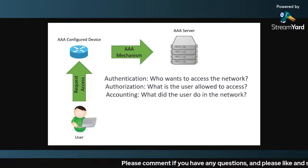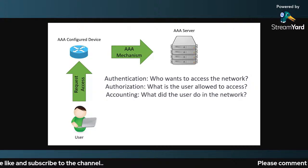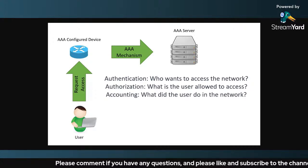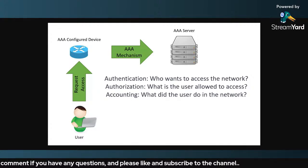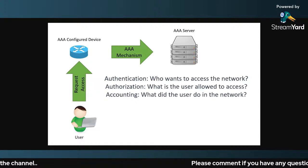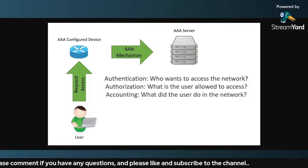RADIUS defines what access the user has and grants that access. The third component is accounting, which means what did the user do in the network. Related protocols include TACACS+, Diameter — these are different forms of a similar concept, but the underlying idea is the same.